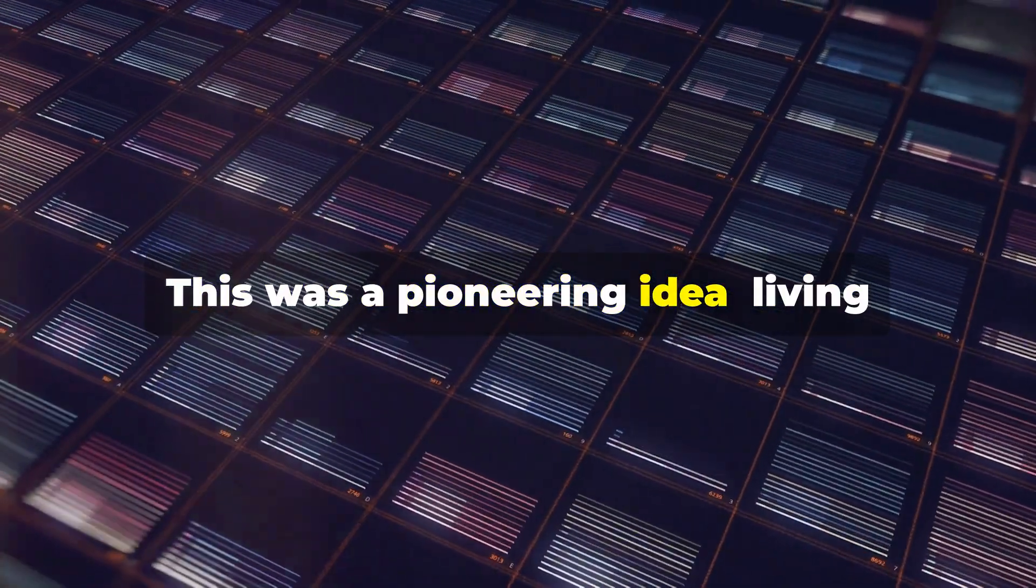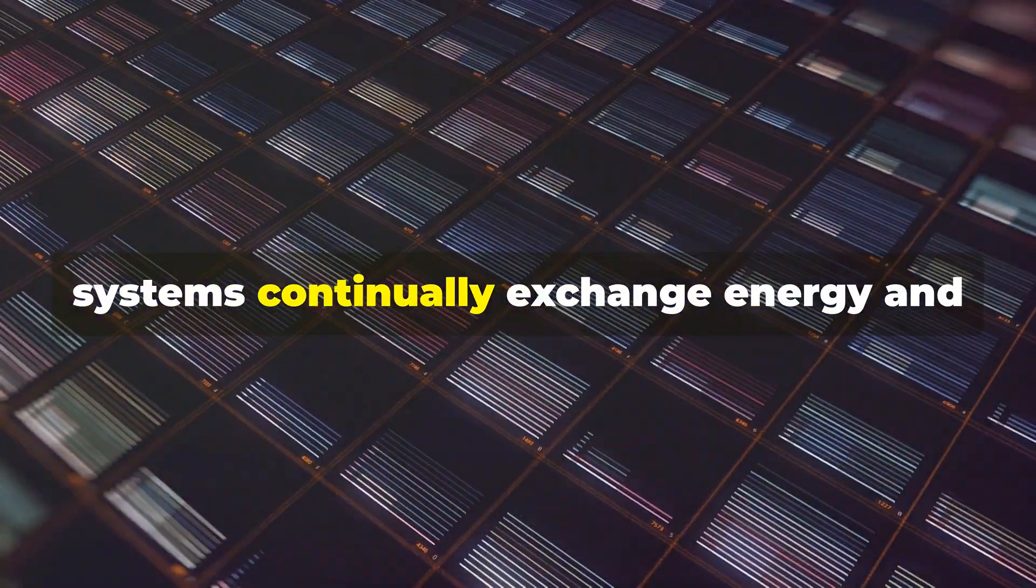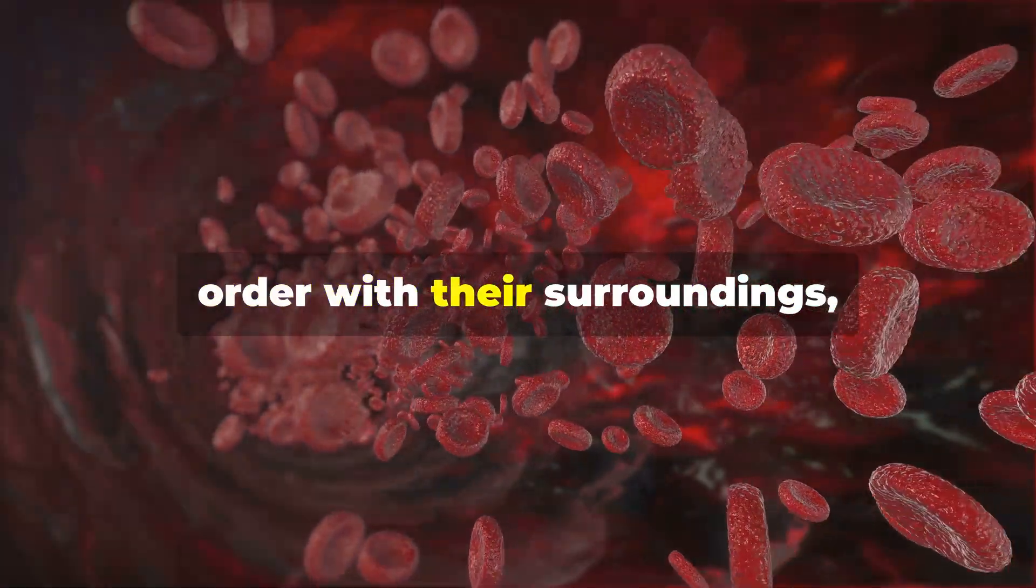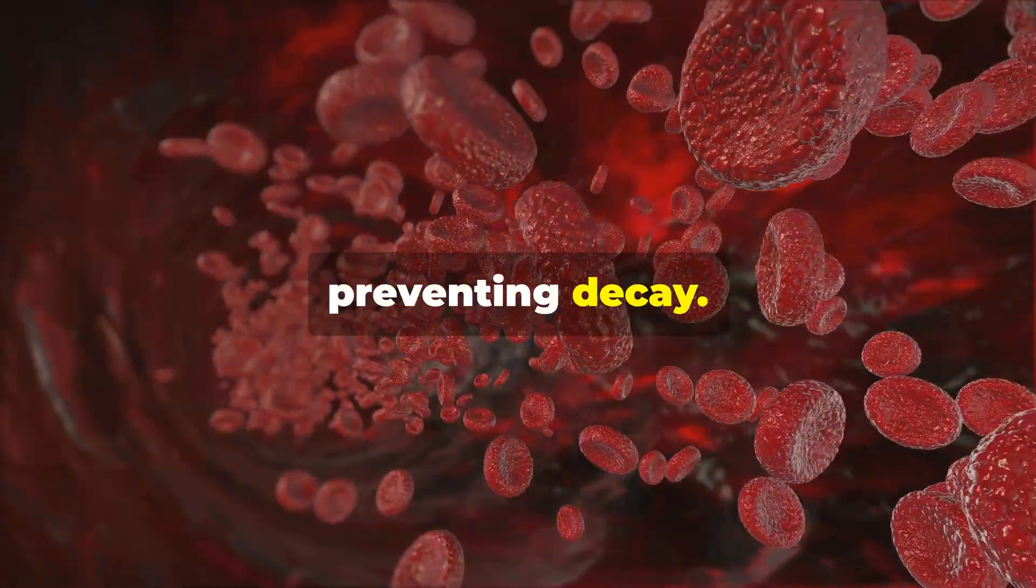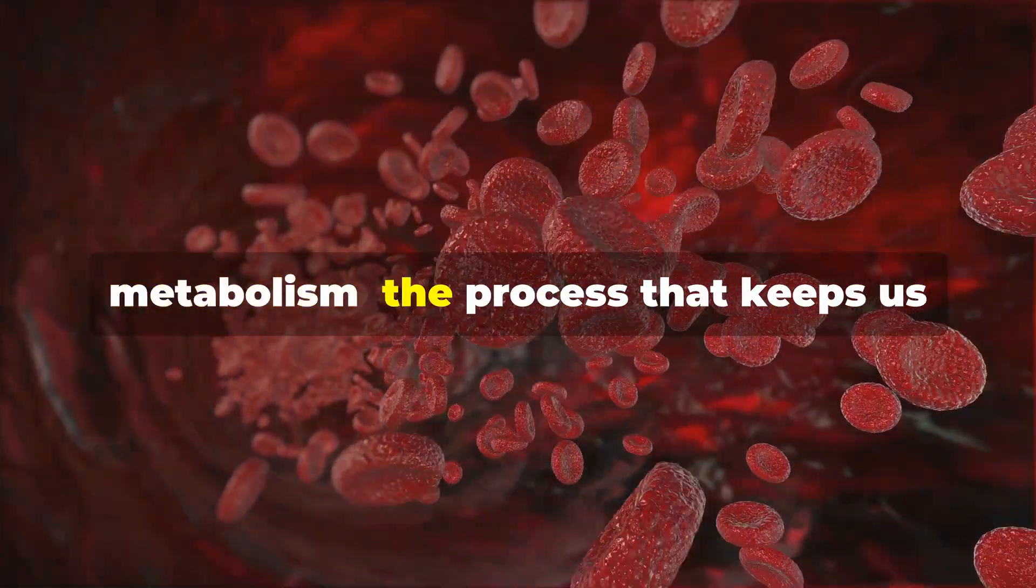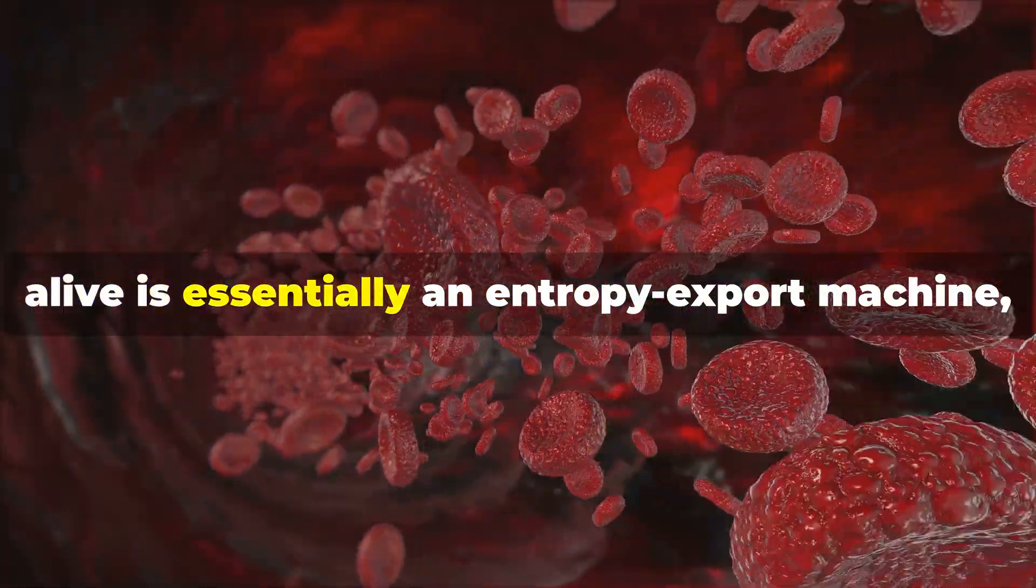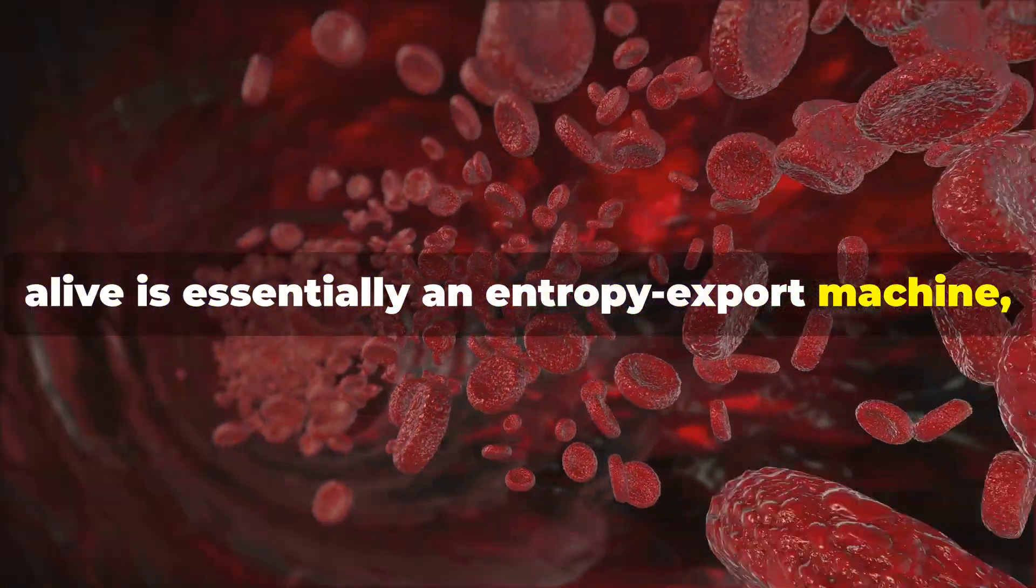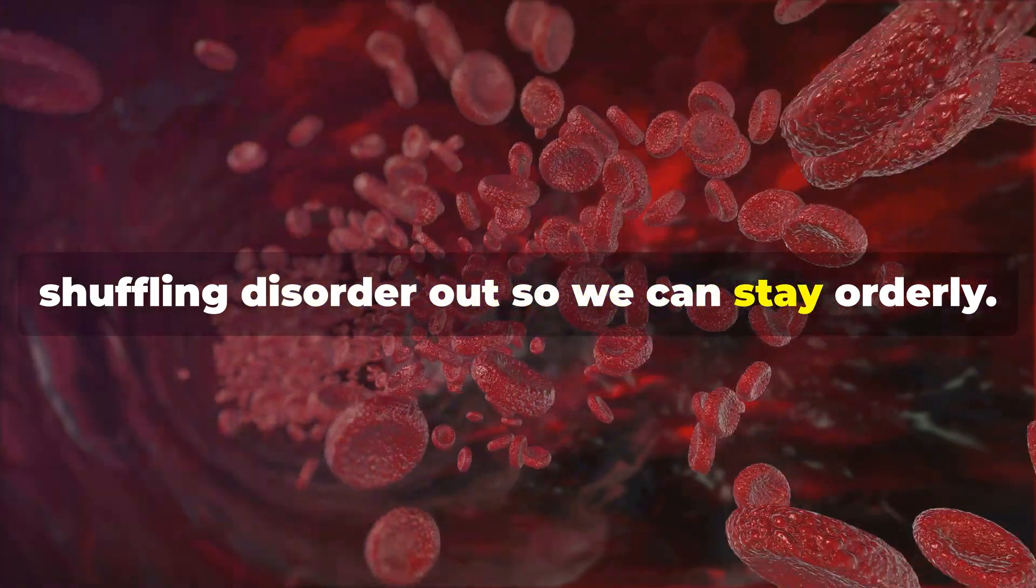This was a pioneering idea. Living systems continually exchange energy and order with their surroundings, preventing decay. Schrödinger used this concept to explain metabolism. The process that keeps us alive is essentially an entropy export machine, shuffling disorder out so we can stay orderly.